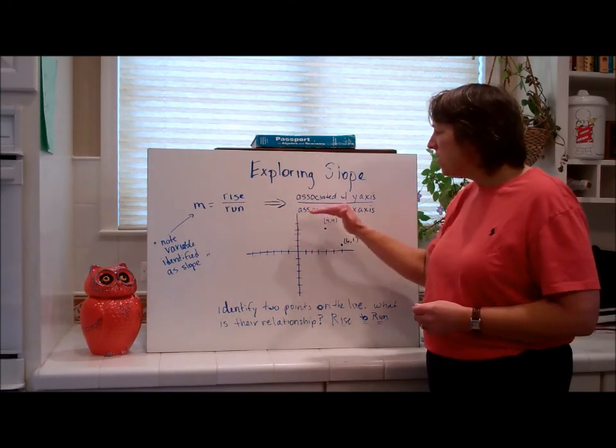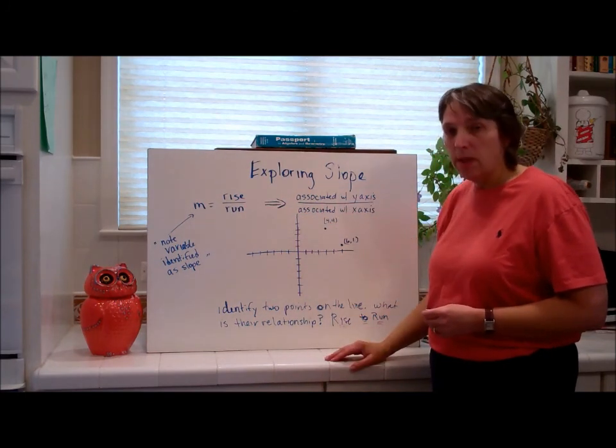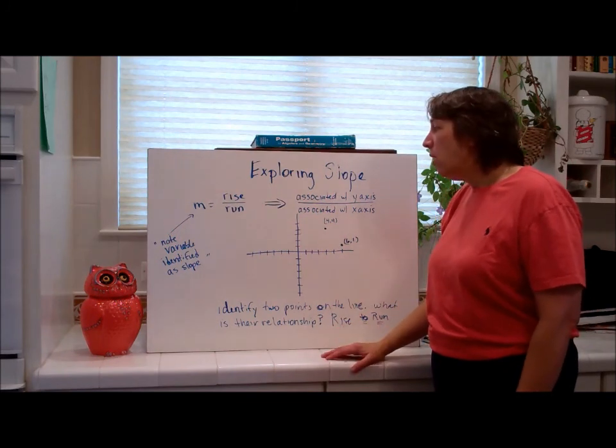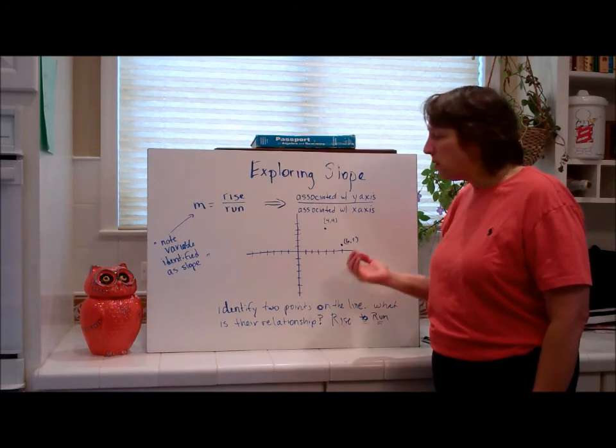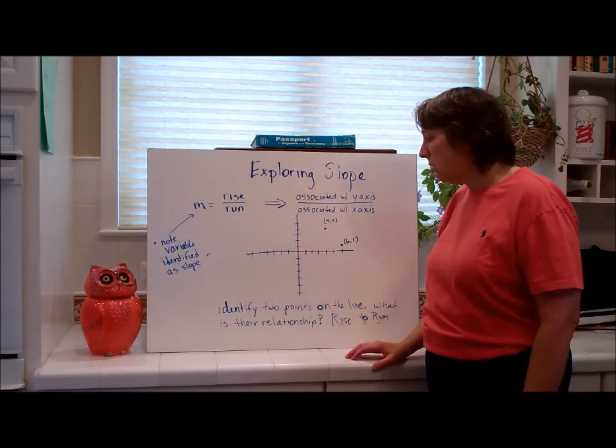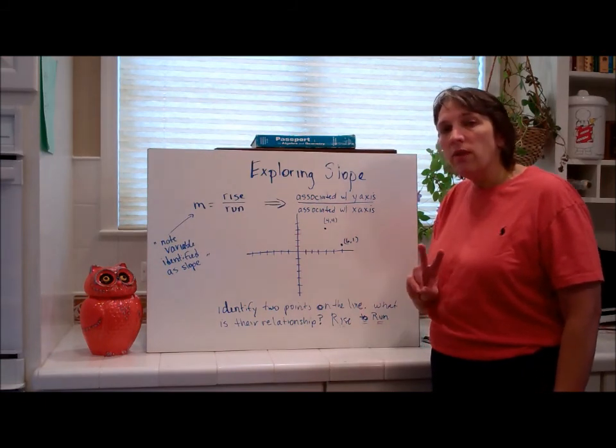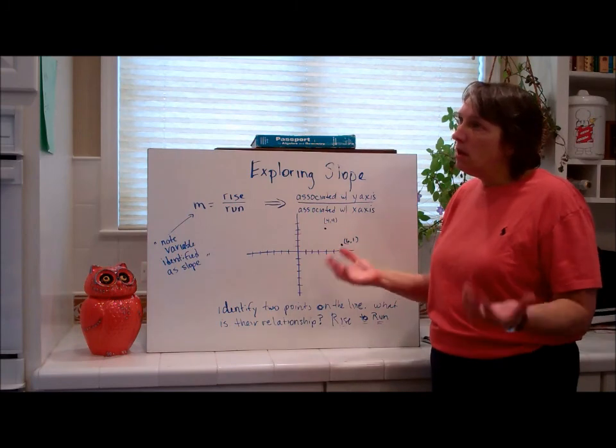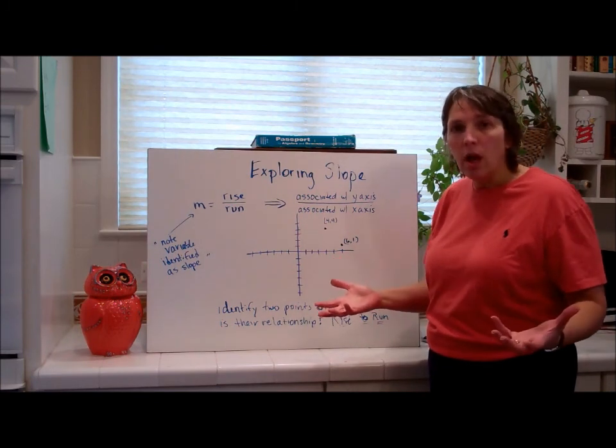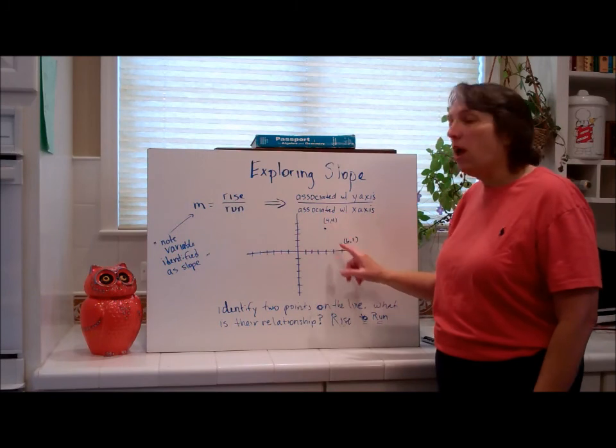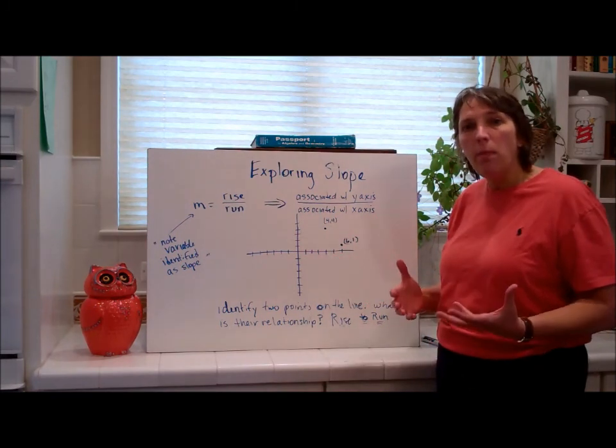Now, the rise is associated with the y-axis because the y-axis is vertical, and the run is associated with the x-axis because the x-axis is horizontal. Now, to find the slope of a line, you first need to identify two points, because the shortest distance between two points is a straight line. So I left out the y-axis so I can show you how you go about that.